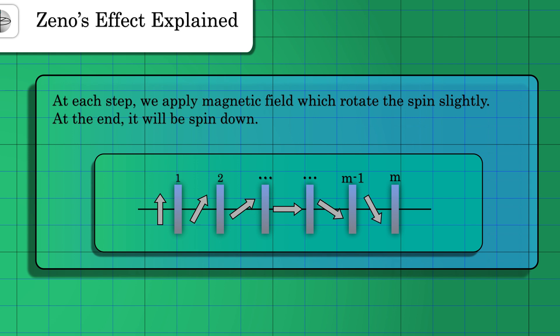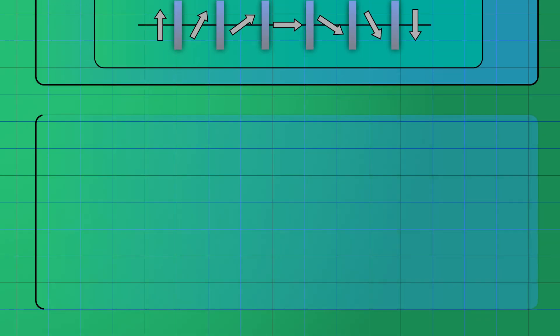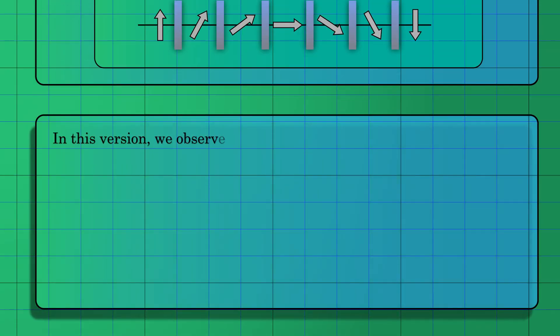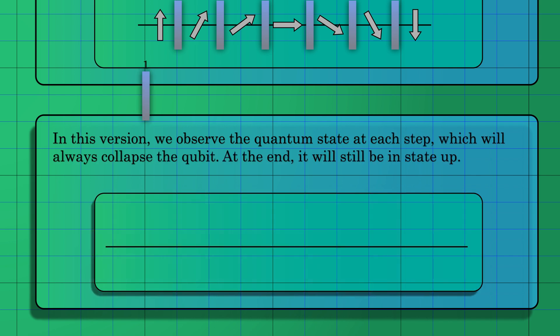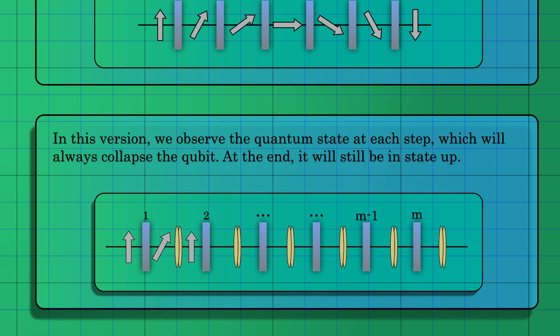But now let's put a twist on the story. If we measure the qubit at each stage, its state will consistently collapse to an up state with very high probability. This is because the magnetic field only made small rotations to the qubit. Finally, at the end of the experiment, the qubit will return to an up state.